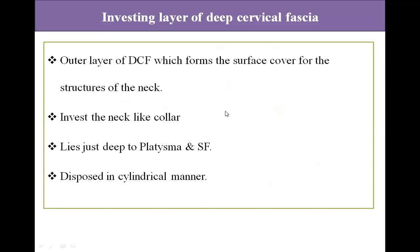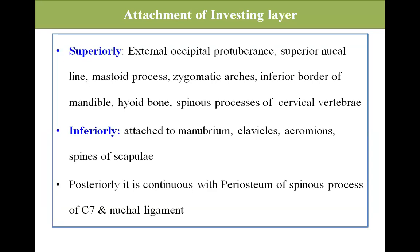Investing layer of the deep cervical fascia: it is the outer layer of the deep cervical fascia, which forms the surface cover for the structures of the neck. It invests the neck like a collar. It lies just deep to the platysma muscle and the superficial fascia. It is disposed in a cylindrical manner. Superiorly, it is attached to the external occipital protuberance, superior nuchal line, mastoid process, zygomatic arches, inferior border of the mandible, hyoid bone, and spinous process of the cervical vertebrae.